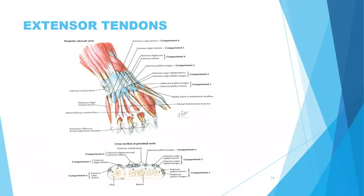Extensor compartments: Compartment 3 — extensor pollicis longus. Compartment 4 — extensor digitorum communis and extensor indicis. Compartment 5 — extensor digitorum communis of the little finger. Compartment 6 — extensor carpi ulnaris. With compartment 4, the extensor digitorum tendons move towards your fingers, past the transverse fibres and into the dorsal expansion — which leads us to the anatomy of the finger.